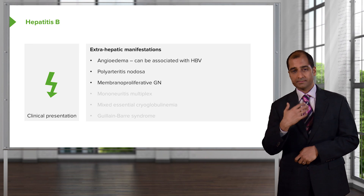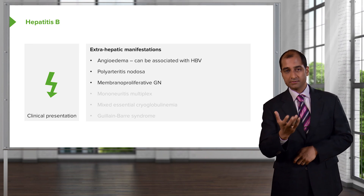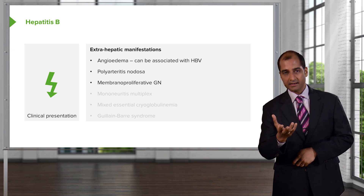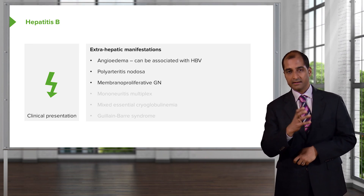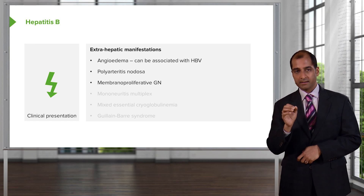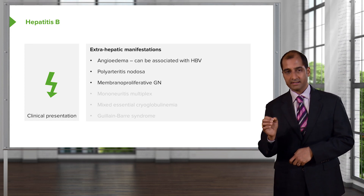Stick with me and I will get you there. MPGN can be nephritic and nephrotic — type 1 is much more common than type 2.